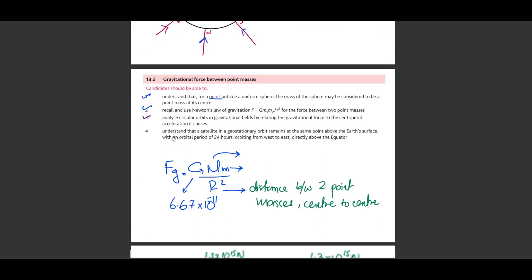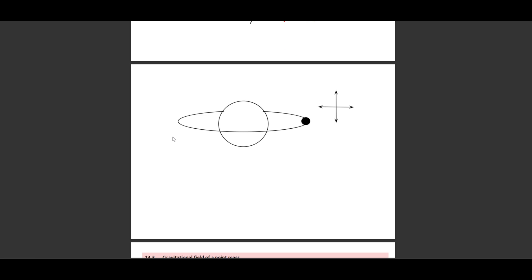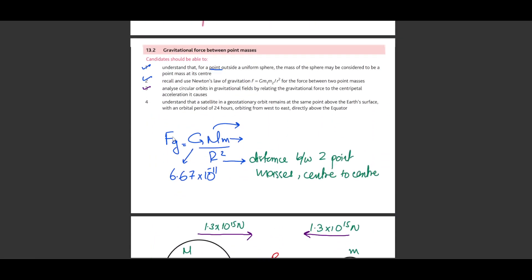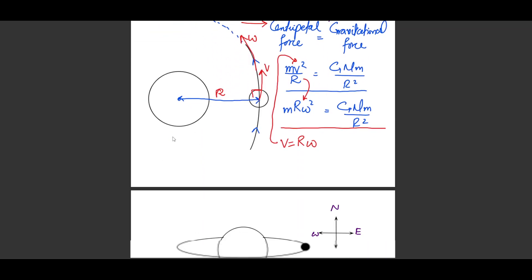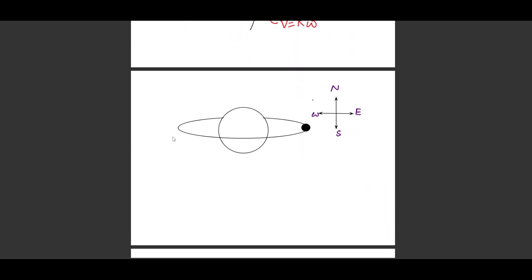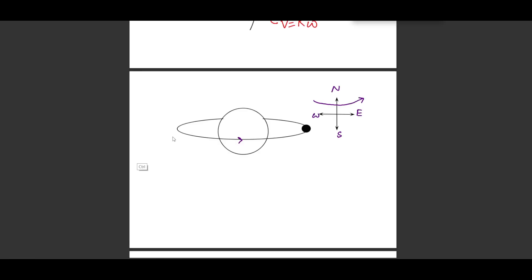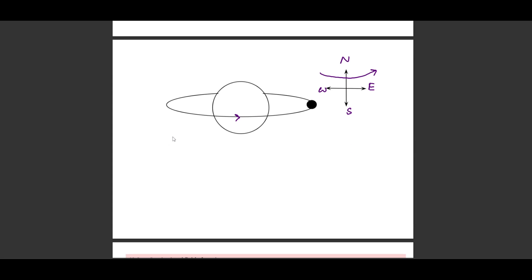Point four is understanding the geostationary satellite orbit — a very common exam question. According to the syllabus, a geostationary satellite moves from west to east above the equator. The orbit must be above the equator — you need to state this to the examiner. The satellite moves from west to east, matching the Earth's rotation.